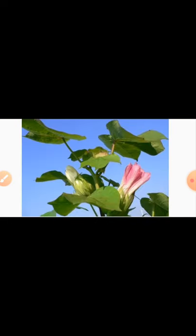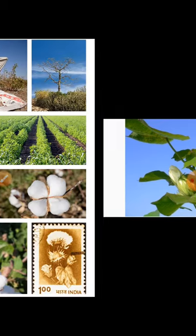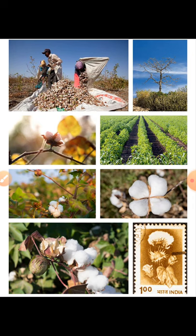Cotton is the crop of tropical and subtropical areas. It requires uniformly high temperature varying between 21 degrees Celsius to 30 degrees Celsius. The growth of cotton is retarded when the temperature falls below 20 degrees Celsius. Frost is enemy number one of the cotton plant, and it is grown in areas having at least 210 frost-free days in a year.